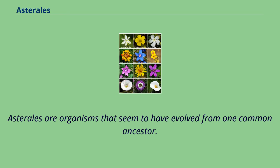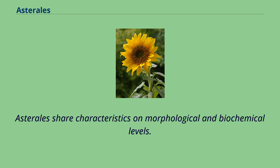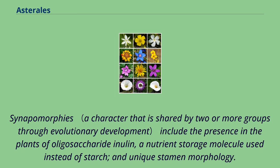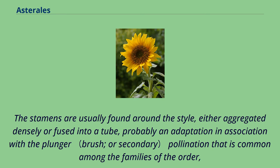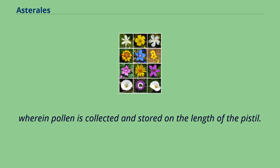Asterales are organisms that seem to have evolved from one common ancestor. Asterales share characteristics on morphological and biochemical levels. Synapomorphies include the presence in the plants of oligosaccharide inulin, a nutrient storage molecule used instead of starch, and unique stamen morphology. The stamens are usually found around the style, either aggregated densely or fused into a tube, probably an adaptation associated with the plunger pollination common among the families of the order, wherein pollen is collected and stored on the length of the pistil.